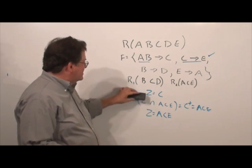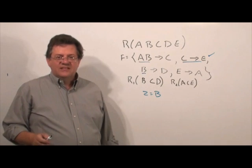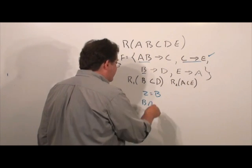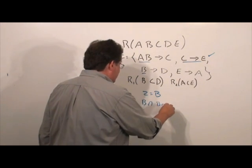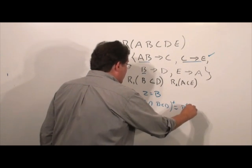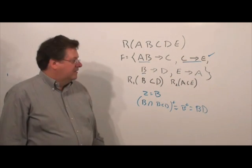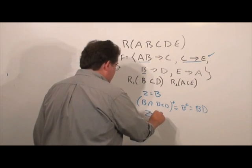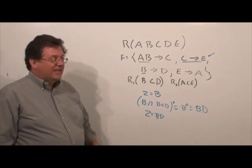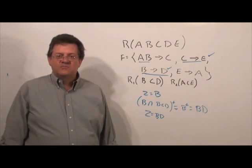Just an exercise. Let's take a look at B function determines D. We set our Z equal to the left-hand side. Then we do left-hand side or whatever the Z is intersect BCD. We want the closure of that, which is B closure equals BD. Now, our Z now equals the previous Z plus the BD. And it has the right-hand side. So, that functional dependency is preserved.